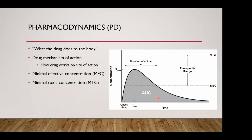Whereas pharmacokinetics is the study of what the body does to the drug, pharmacodynamics is the study of what the drug does to the body. Going back to that dose-exposure curve, pharmacokinetics gives us the PK information — peak concentration and timing — but when it comes to pharmacodynamics, we think about key thresholds: the MEC (minimal effective concentration), the smallest amount of drug needed to exert its pharmacological effect, and the MTC (minimal toxic concentration). The space between these two values is called the therapeutic range.